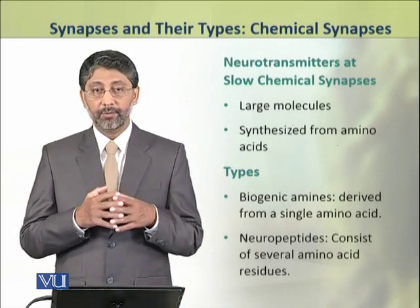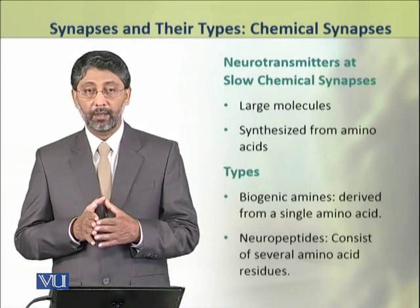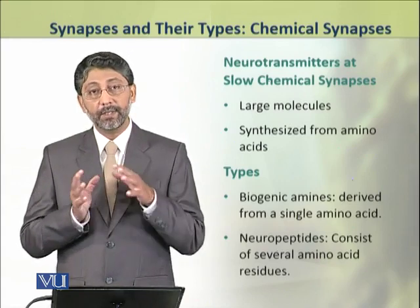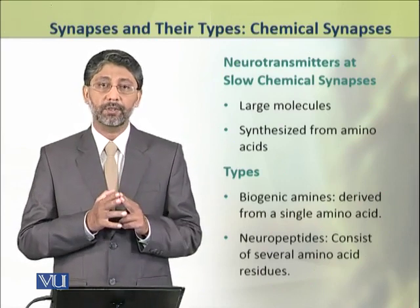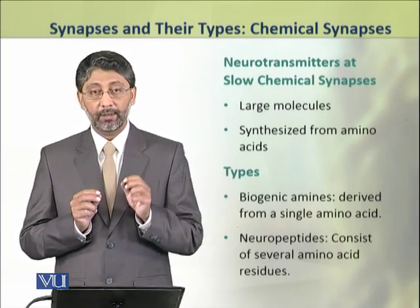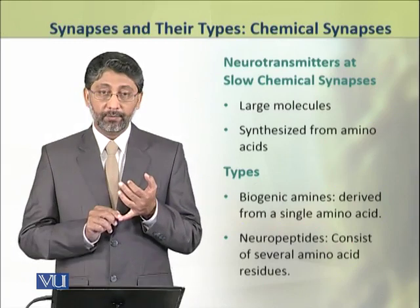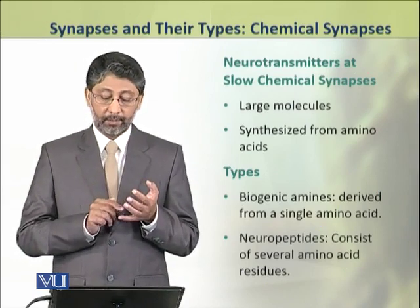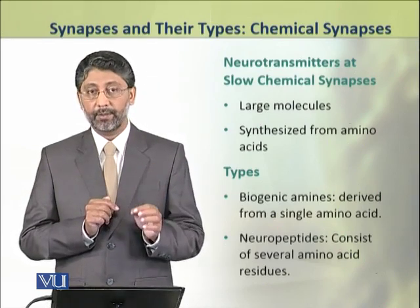The neurotransmitters involved in slow chemical transmission are generally large molecules, synthesized from amino acids. There are two major groups: biogenic amines, which are derived from a single amino acid, and neuropeptides, which consist of several amino acid residues.